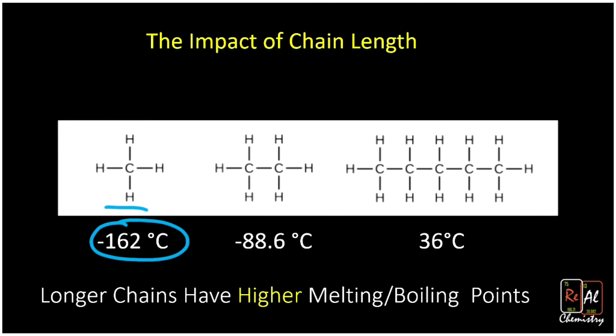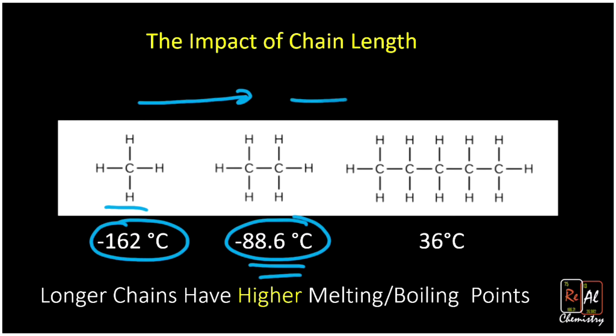That's true as well of ethane, which has two carbons. Notice as we go from one carbon to two carbons, we get stronger intermolecular forces and our boiling point goes up. It goes up even further from ethane to pentane. Pentane has five carbons and a boiling point of 36 degrees Celsius, making it a liquid at room temperature. The take-home point is longer chains have higher melting points and boiling points. Both follow the same trend because both rely on the strength of these intermolecular forces.